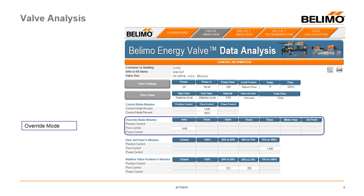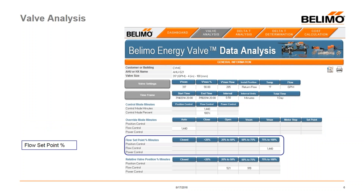The override mode section, again broken out by the three types of control, tells you how many minutes someone may have logged into the valve and overrode the control. You can go inside the valve through WebView, take control, open or close the valve, stop it, or change set points. If you override the valve, that will change your data set, and that's something you need to be aware of.